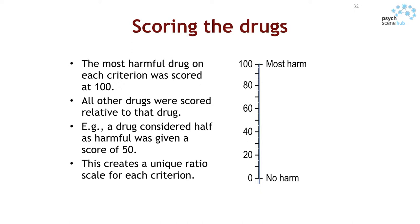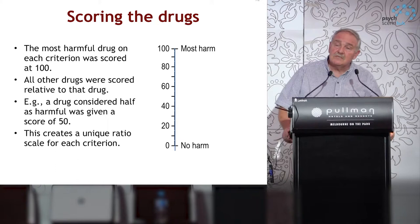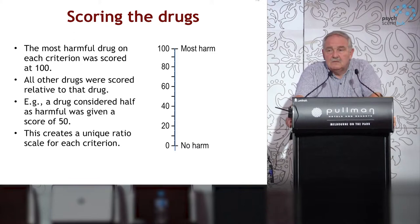Each parameter is scaled on a 0 to 100 scale. The critical approach is to decide which is the most harmful drug on each of those 16 parameters of harm and put that at the top — the most harmful drug scores 100. Then you scale all the other drugs in relation to that as a ratio of harm. A drug half as harmful scores 50; a tenth as harmful scores 10; a hundredth as harmful scores 1.